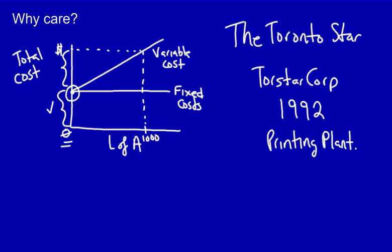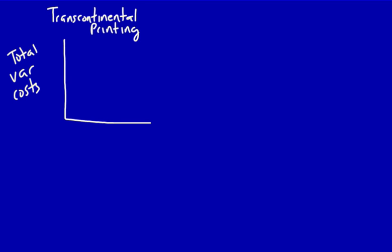How could Torstar reduce their risk? They could do so by reducing or eliminating their fixed costs so that they only have variable costs. And that's exactly what Torstar did. In July of 2016, Torstar closed their printing press in Vaughan. They contracted out 100% of their printing operations to Transcontinental Printing, Canada's largest commercial printing company — outsourcing the printing of the Toronto Star to an outside supplier. The move to close the plant affected 220 full-time and 65 part-time employees. For every newspaper printed, Transcontinental Printing would charge Torstar, but if zero newspapers were printed, they would charge them nothing — making it 100% variable cost.